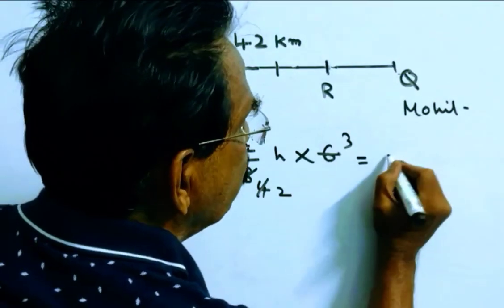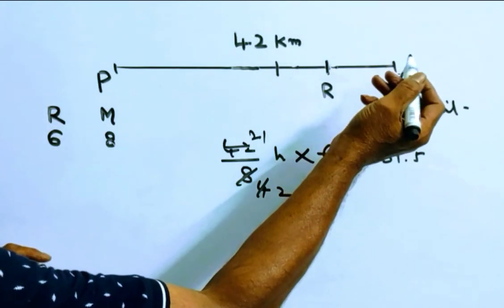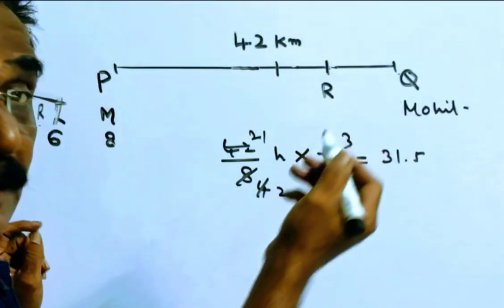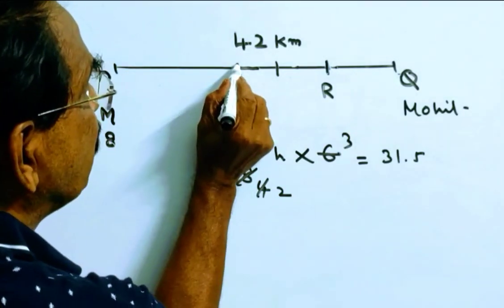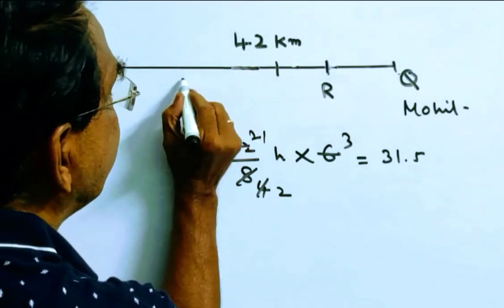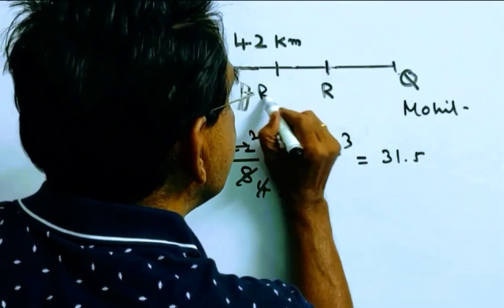63 by 2, that is 31.5 km. Friends, by the time Mohit reaches Q, Rohit travels only 31.5 km. Now Rohit is here.